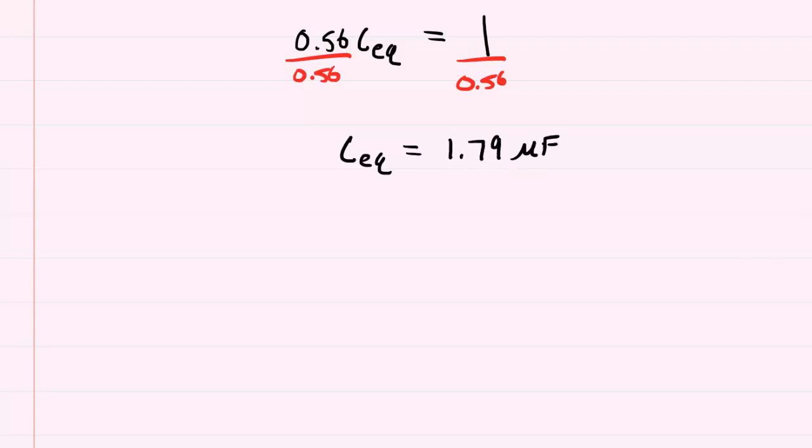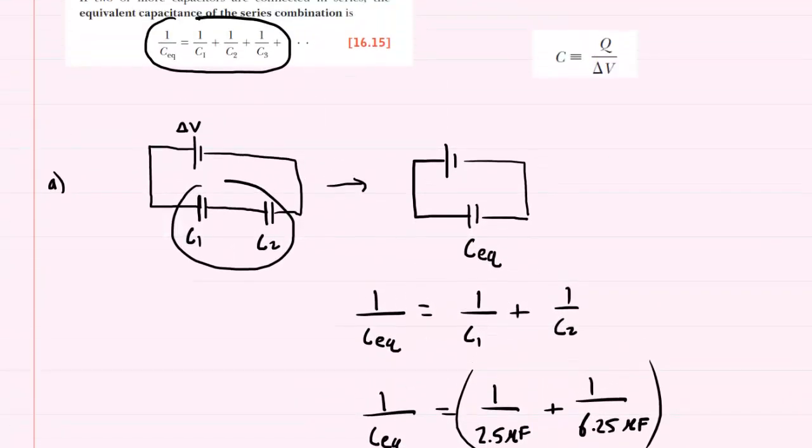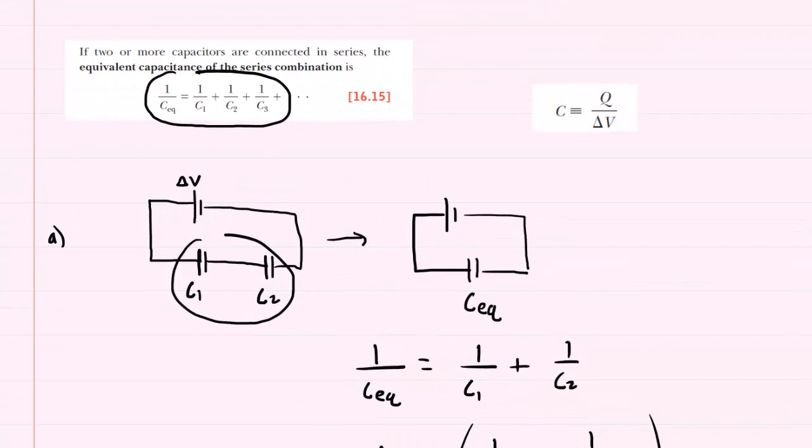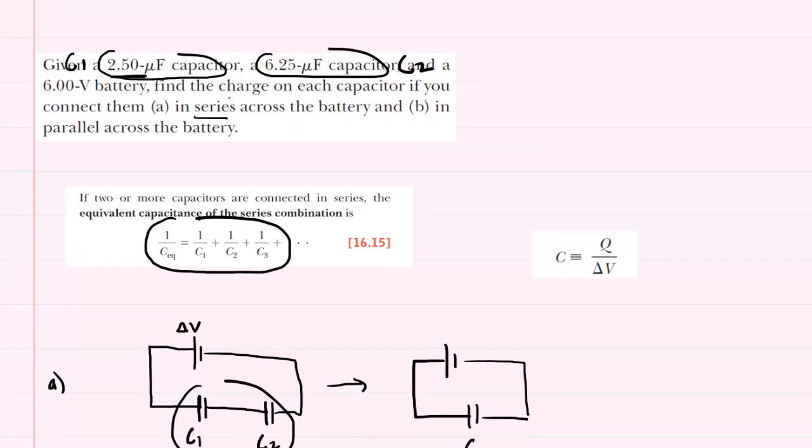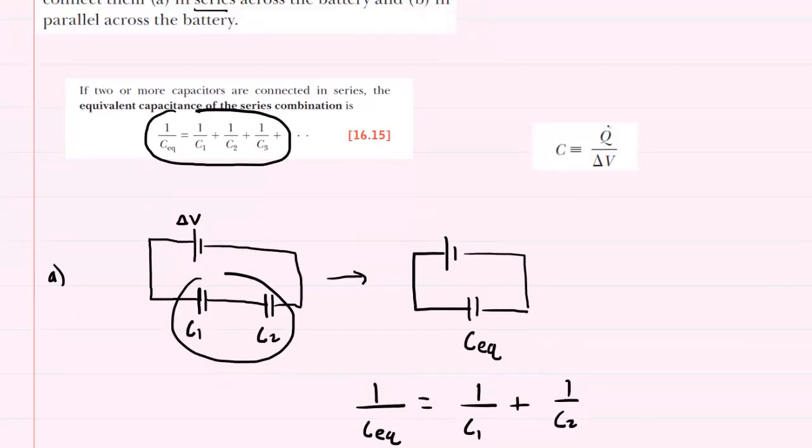Now, moving back to the picture, and indeed the question, we had to calculate the amount of charge on each capacitor. Now, the relationship between charge, potential difference, and capacitance is given by this equation right here.